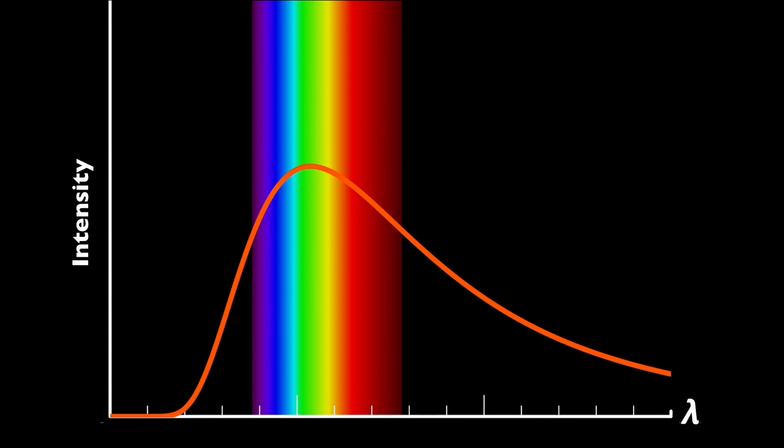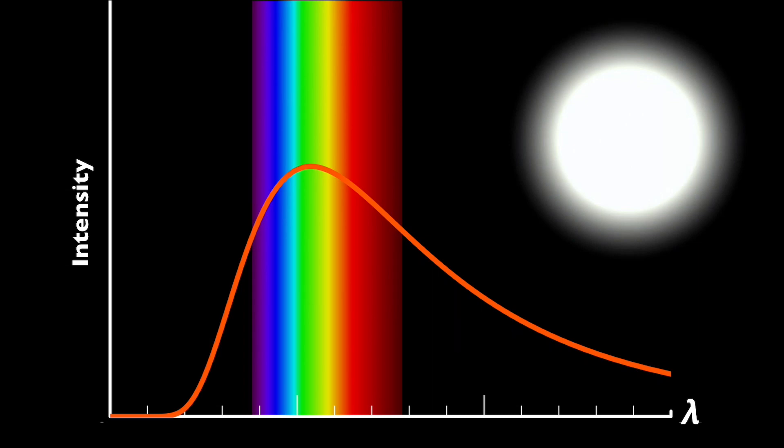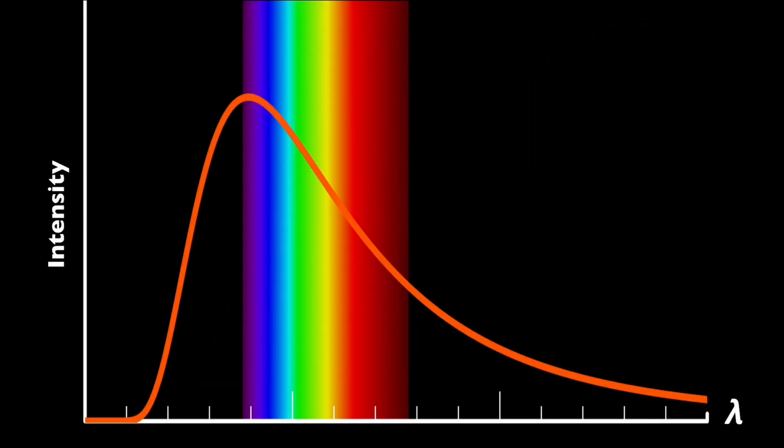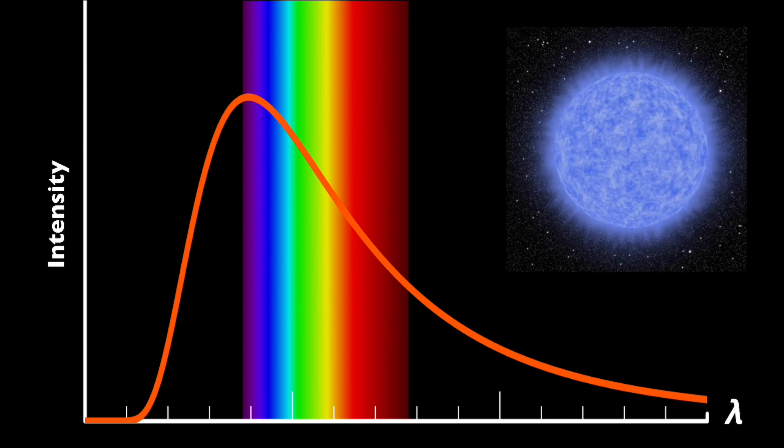And that, of course, would be the blackbody curve of a green star. A green star that actually looks white. So a star that peaks in the violet is emitting just as much blue light, which means that those purple stars are actually perceived as blue.